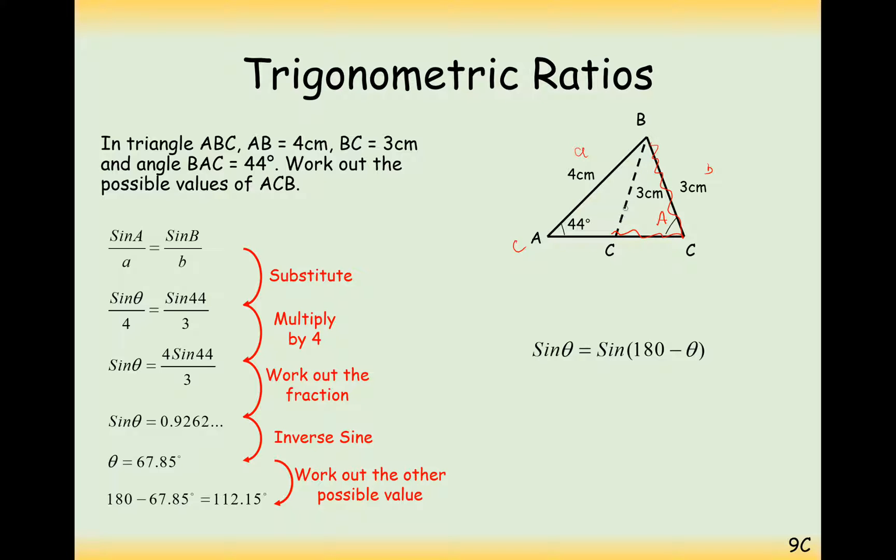So all the sides are still the same, we've just drawn our triangle a bit differently. And we can clearly see here now that we have an obtuse angle of 112.15. So that's how we could get two possible answers for an angle when using the sine rule.